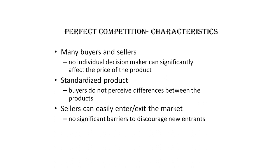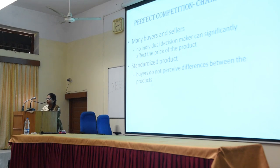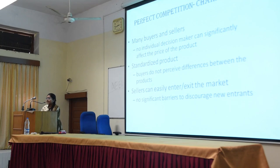The second characteristic is standardised or homogeneous products. The products produced in perfect competition are homogeneous in nature; buyers cannot distinguish between them, and because of this, prices do not vary between sellers in the market. Next, sellers can easily enter or exit the market anytime they want. If they want to produce, they produce; if they want to exit, they stop production. There is no requirement for a patent or license fee.